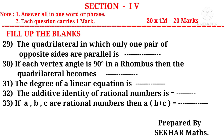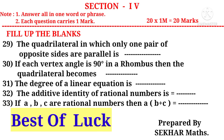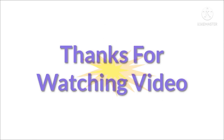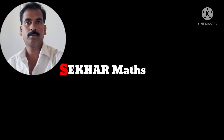Thirtieth question: if each vertex angle is 90 degrees in a rhombus, then the quadrilateral is — dash — from Chapter 3, Construction of Quadrilaterals. Thirty-first question: the degree of a linear equation is — dash — from Chapter 2, Linear Equations in One Variable. Thirty-second question: the additive identity of rational numbers is — dash — from Chapter 1, Rational Numbers. Thirty-third question: if A, B, C are rational numbers, then A into B plus C equals — dash — from Chapter 1, Rational Numbers. It is prepared by Shaker Maths. Thank you.